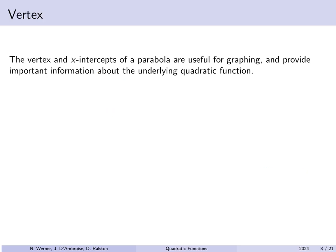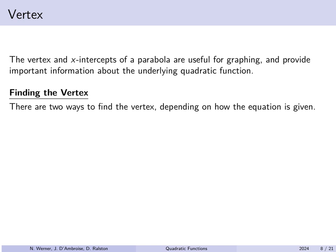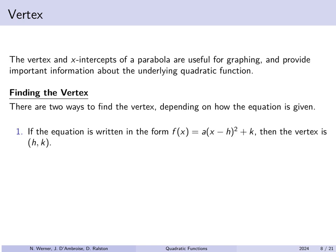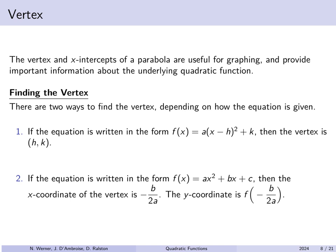The vertex and x-intercepts of a parabola are useful for graphing and provide very important information about the function. To find the vertex: if it's given in vertex form, the vertex is simply (h, k). If given in general form, we would need to complete the square. If a equals 1, you end up with −b/2 as the x-coordinate of the vertex. However, with an a factored out, you'd end up with −b/(2a). The y-coordinate is found by plugging that x-coordinate back into the function.